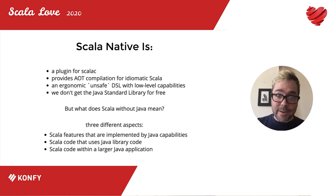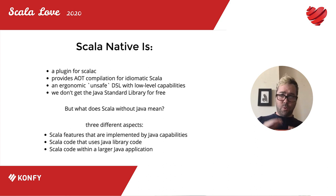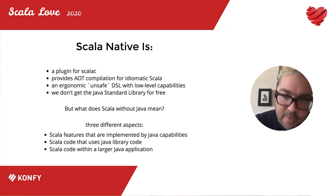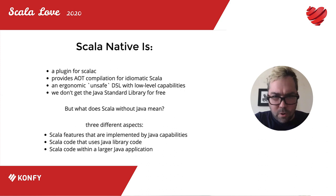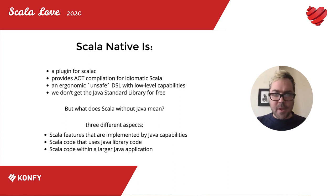Scala Native is a plugin for the Scala compiler. It provides ahead-of-time compilation for idiomatic Scala and outputs compact binary executables — 5 to 10 megabytes — similar to what a C, Rust, or Go compiler spits out. It also provides an ergonomic unsafe DSL with low-level capabilities. The catch is that it doesn't include the Java standard library for free, like traditional Scala does, because it's not running on a JVM.